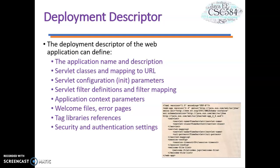Web.xml is part of the servlet standard for web applications. It describes the classes, resources, and configuration of the application and how the web server uses them to serve web requests. When the web server receives a request for the application, it uses the deployment descriptor to map the URL of the request to the code that ought to handle the request. The web deployment descriptor can define servlet classes and mapping to URLs, servlet configuration for init parameters, servlet filter definition and filter mapping, application context parameters, welcome files, error pages, and more.